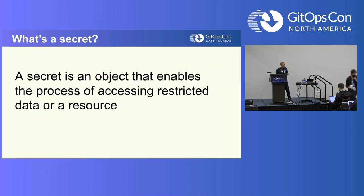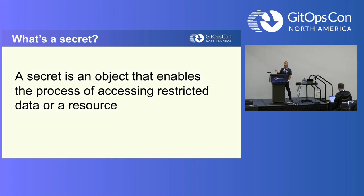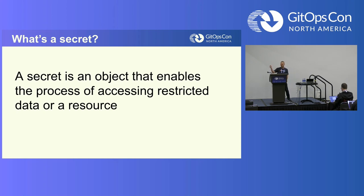Let's start with a quick definition of what a secret is. A secret is an object that enables the process of accessing restricted data or a resource. The data itself or the environment that you want to access is not the secret — the data is protected. But the way to access the data, the key, is the actual secret.